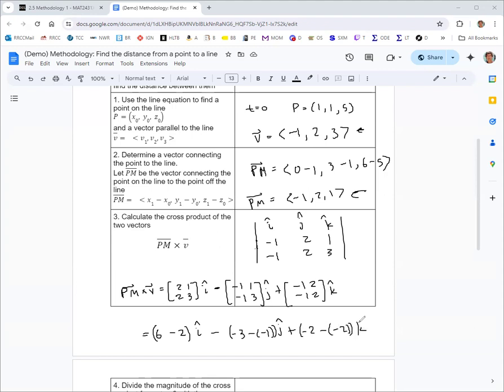So we get 4i, this is -3 plus 1, which is -2, but then there's a negative there, so 2j, and then 0k, so (4, 2, 0). So that's the cross product of the two vectors.